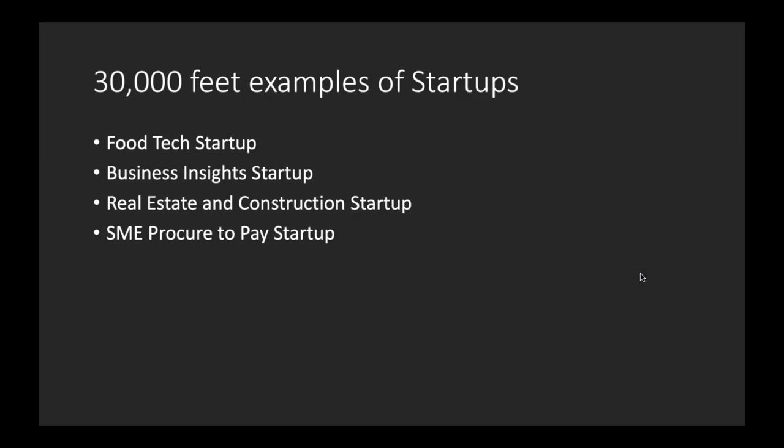I asked Archana what kind of companies are in this session and got four examples. I really wanted to make it personal and tailored to your company. One was a food tech startup — Bond Cuisine, I think — business insights, a real estate and construction startup, and Pry Box, the SME procure-to-pay startup. If I can, I'll give examples based on these. If there are other companies who want me to check out for them, just contact me offline.